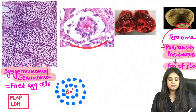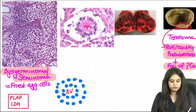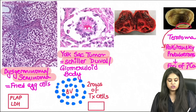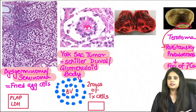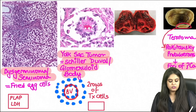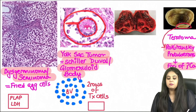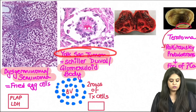The next tumour always comes with a history of a 3-4 year old child with an ovarian tumour — at that age it is always a yolk sac tumour. Microscopically you see the Schiller-Duval or glomeruloid body, which is glomerulus-like: a blood vessel in the centre surrounded by two rows of tumour cells separated by a space. The tumour marker is alpha-fetoprotein (AFP).